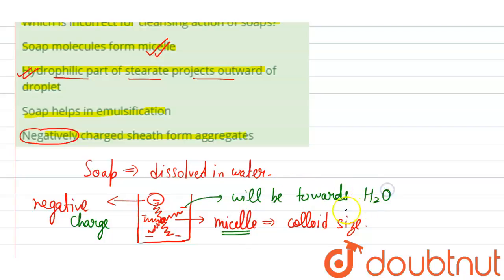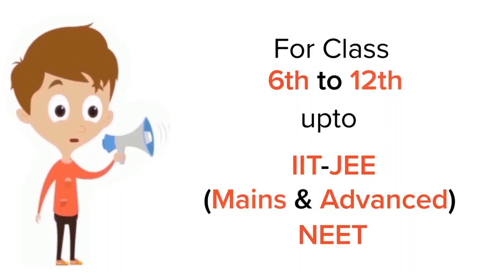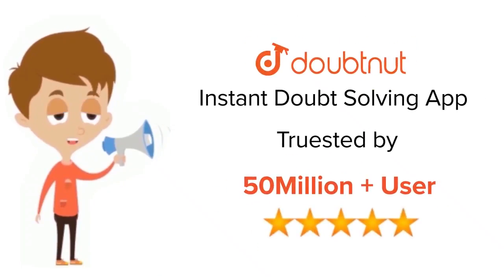The incorrect option is the third option. Soap can help in emulsification. So the correct answer is the third option because we have to find out the incorrect part.